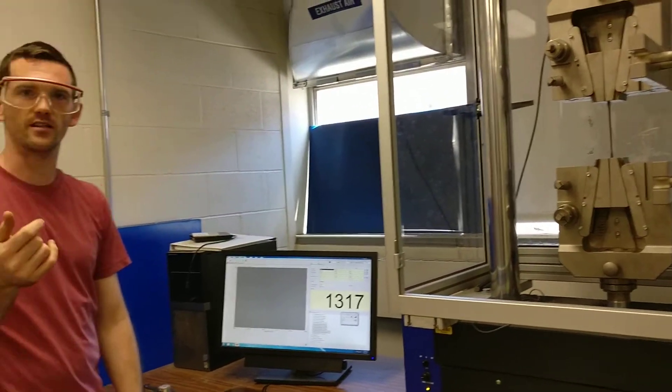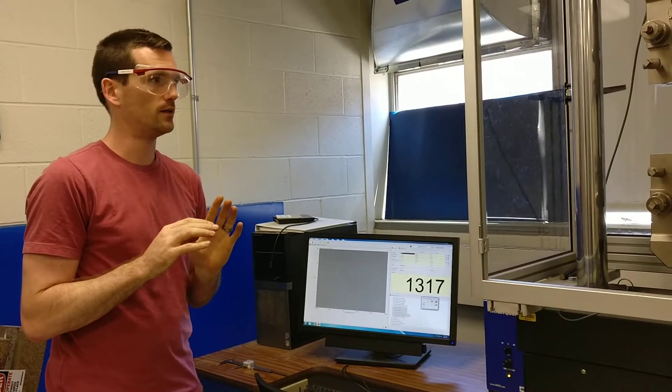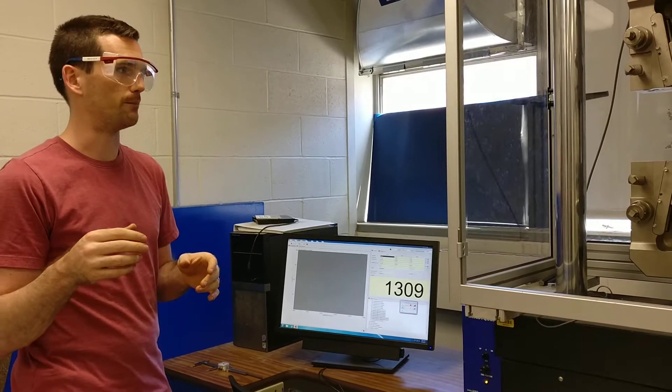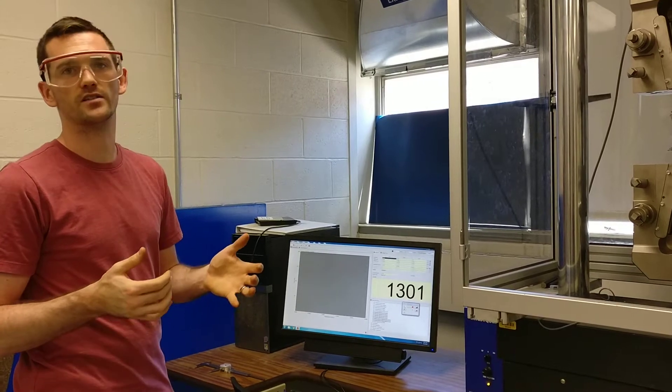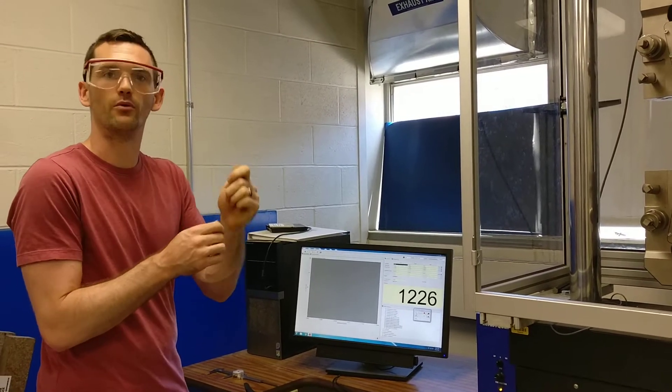So typically, when we have the extensometer on, we're recording up to the yield point with that, and we could remove it after. They're fairly sensitive instruments, so we don't want to necessarily keep them on the sample when they fail all the time.